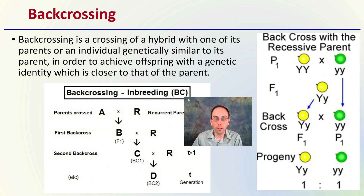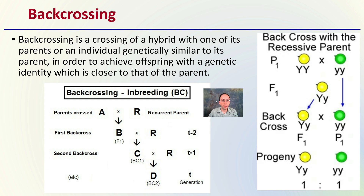Back crossing is the crossing of a hybrid with one of its parents, or an individual genetically similar to its parent, in order to achieve offspring with a genetic identity closer to that of the parent — it's literally going backwards within the cross. Here we have parental strain and F1 strain, with the back cross reverting to one of the parents. Parents A and R are bred together to get offspring B. We breed B with the recurrent parent R again to get C, then C with R again — constantly bringing those genetics back into the line to keep certain traits recurring in the population.